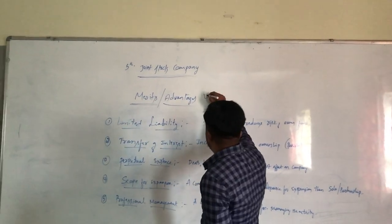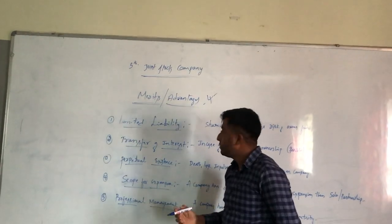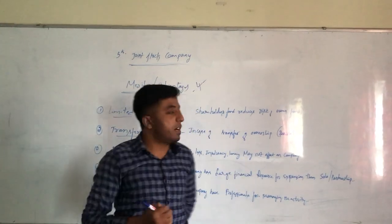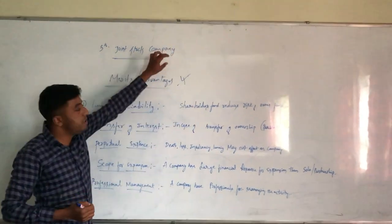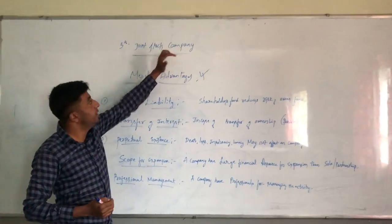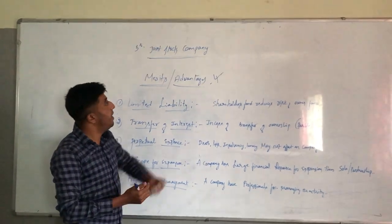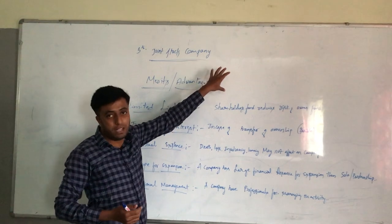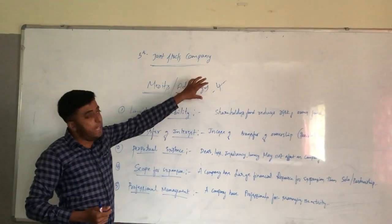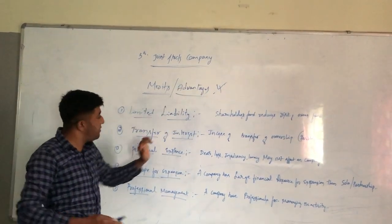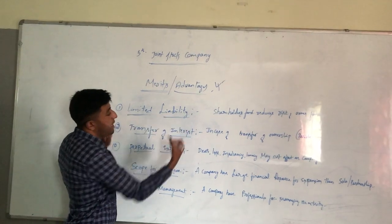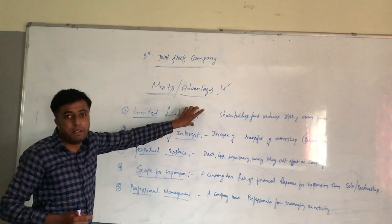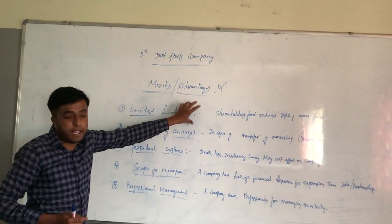Advantages of joint stock company. A joint stock company is an artificial entity created by law. The company has a common seal with perpetual succession. The first advantage is limited liability, which means less liability.